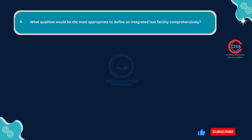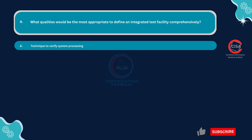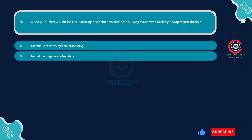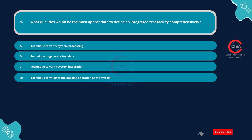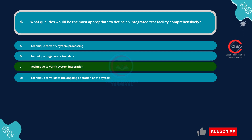Question 4: What qualities would be most appropriate to define an integrated test facility comprehensively? Option A: Technique to verify system processing. Option B: Technique to generate test data. Option C: Technique to verify system integration. Option D: Technique to validate the ongoing operation of the system. The correct answer is Option C: Technique to verify system integration.